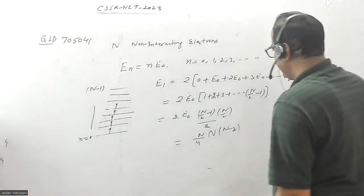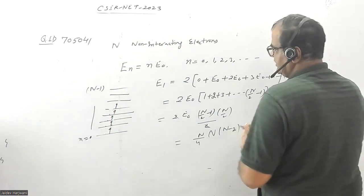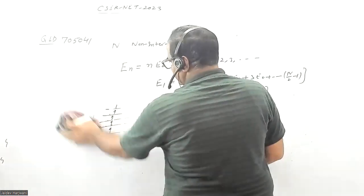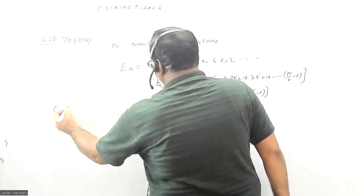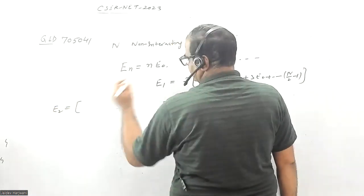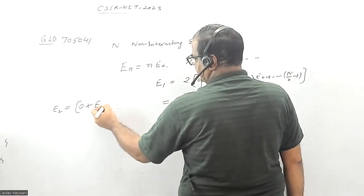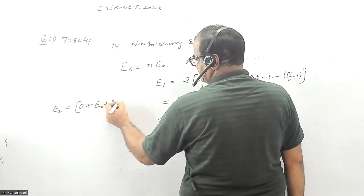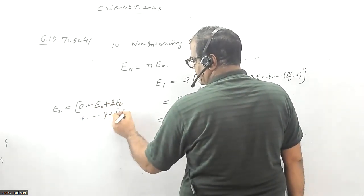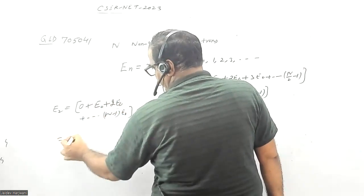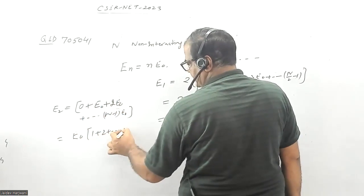In the second case, let us find the energy. The energy will become E2. E2 will be 0, now only one electron is there in one level, so E0, 2E0, and so on will go up to (N minus 1)E0. Let us calculate: E0 common, and number goes from 1 up to N minus 1.